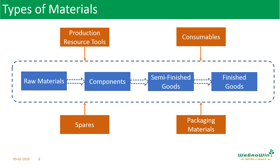Supporting materials are called consumables, like grease, lubricant oil, gloves, etc. And then there are production resource tools — like tools, fixtures, and jigs — whatever is required to support the production. And the spares required for maintenance of the machines. And then packaging materials to complete the production by packing them properly to secure the material and prepare it for transportation.